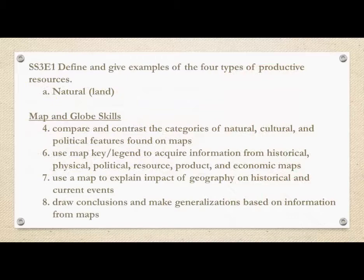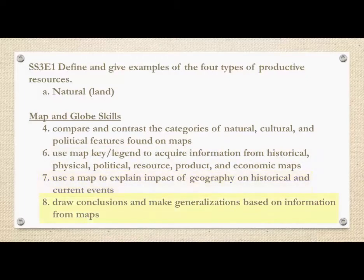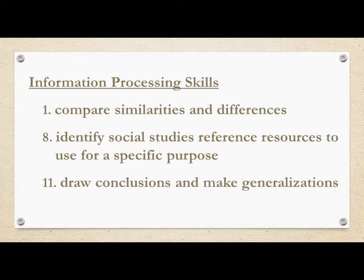Additionally, the activities previewed in this video will also address Economic Standard 1, specifically the use of natural resources, and several of the map and globe skills included in the standards, such as comparing and contrasting categories found on maps, using map keys from different types of maps, using a map to explain the impact of geography on historical events, and drawing conclusions and making generalizations based on information from maps. Some information processing skills from the Georgia Standards of Excellence will also be addressed, including comparing similarities and differences, identifying social studies reference materials, and drawing conclusions and making generalizations.